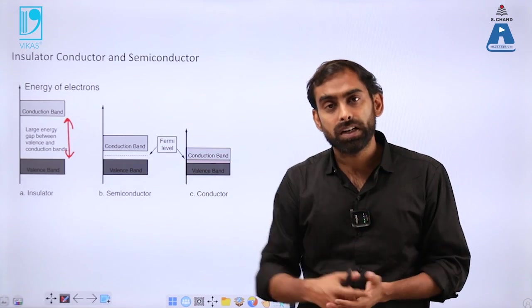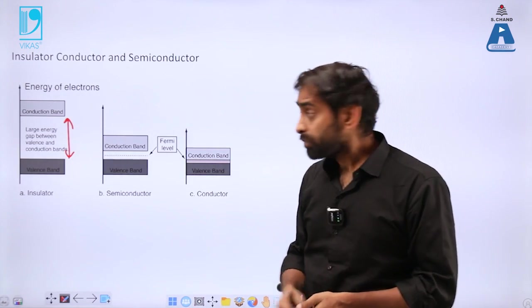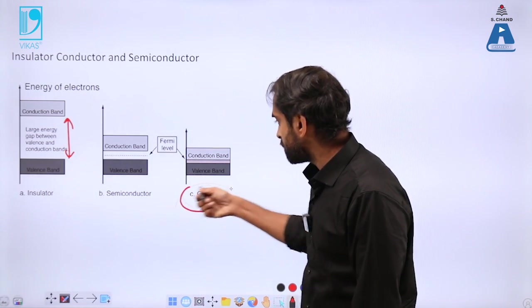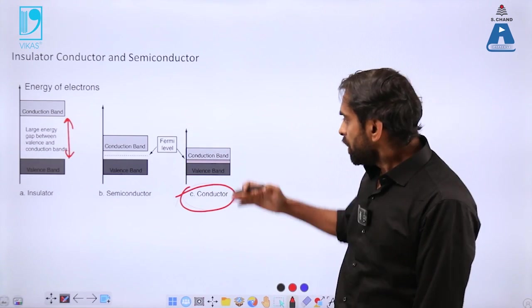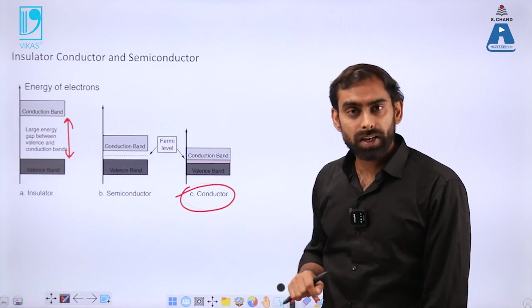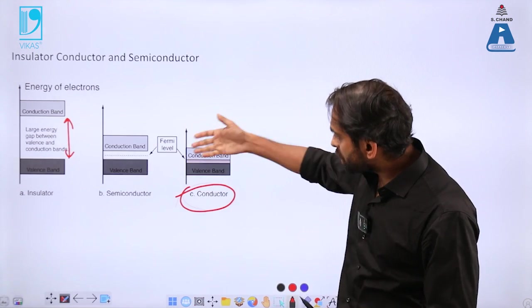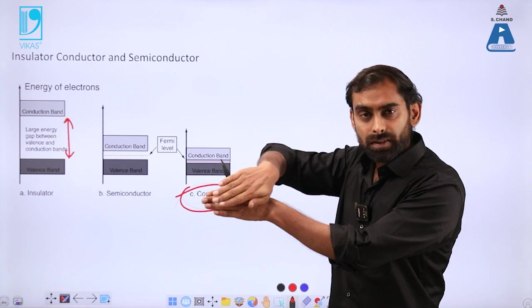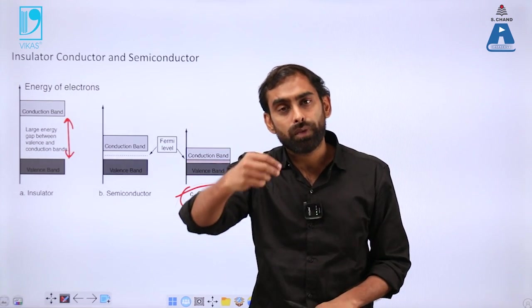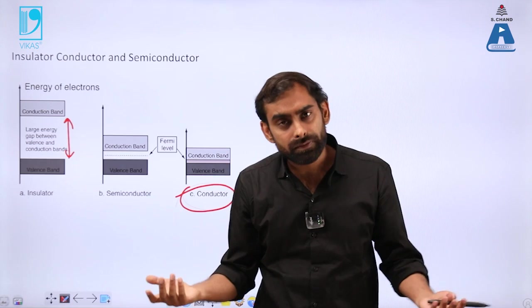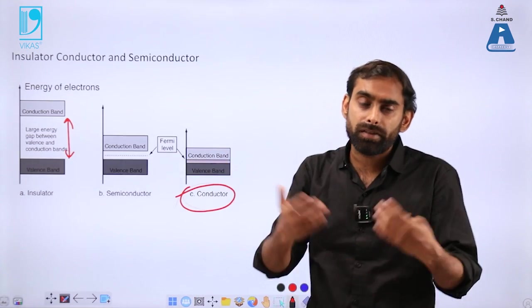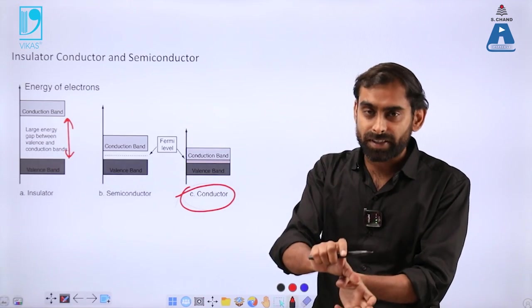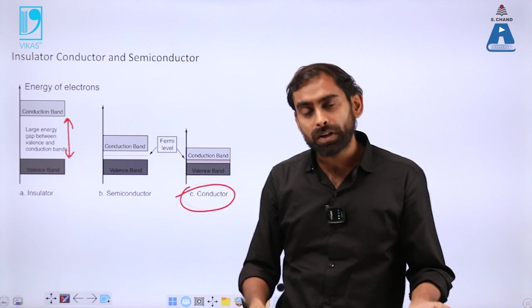Conduction of current is only possible when electrons can leave their atoms. If you look at the case of good conductors or metals, this gap is actually negligible. In fact, the conduction band and valence band are overlapping in metals. Electrons in the valence shell can leave atoms without even giving energy at room temperature.